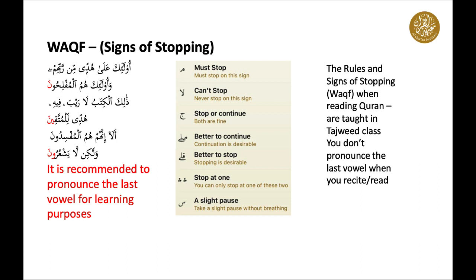Alif is always added with fatah tanween at the end — for example, shamsin/shamsun has no alif at the end, but when it is fatah tanween it becomes shamsa. Generally, tanween is used to distinguish nouns from other parts of speech and indicate that the noun is indefinite. To make the noun definite, the tanween is removed and replaced by a single short vowel.